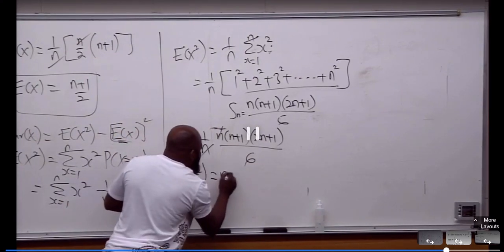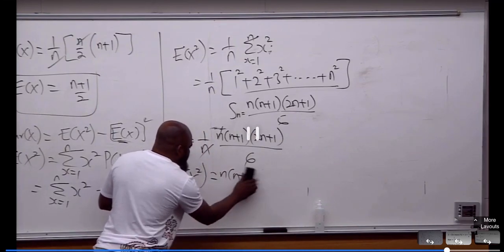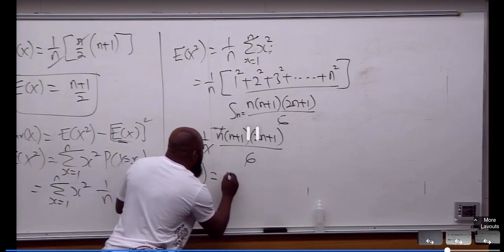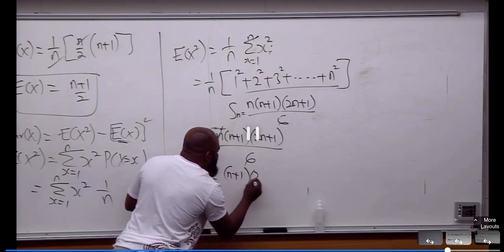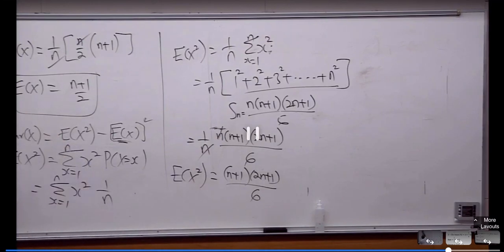Now, this is, oh sorry, this is going to be (N+1)(2N+1) divided by 6. This is expected value of S squared. What is the time now? 49. Thank you.